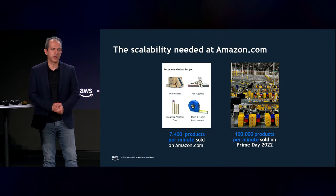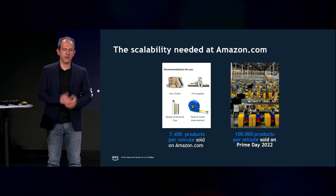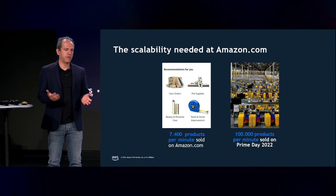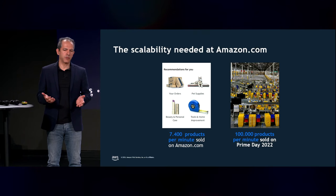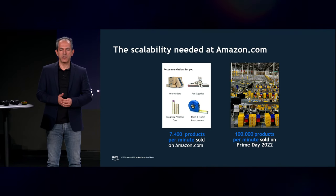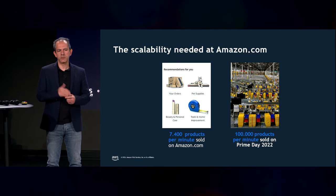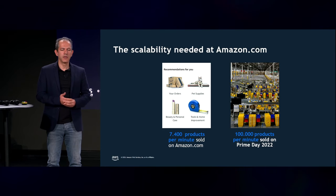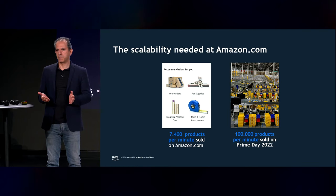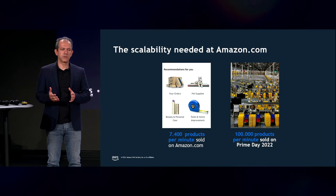Amazon.com, one of our customers. They run their online retail store — in an average minute they sell 7,000 products. On some days, like Prime Day 2022, they reached 300 million products sold in a day, with some minutes hitting 100,000 products. The need for scale is enormous.